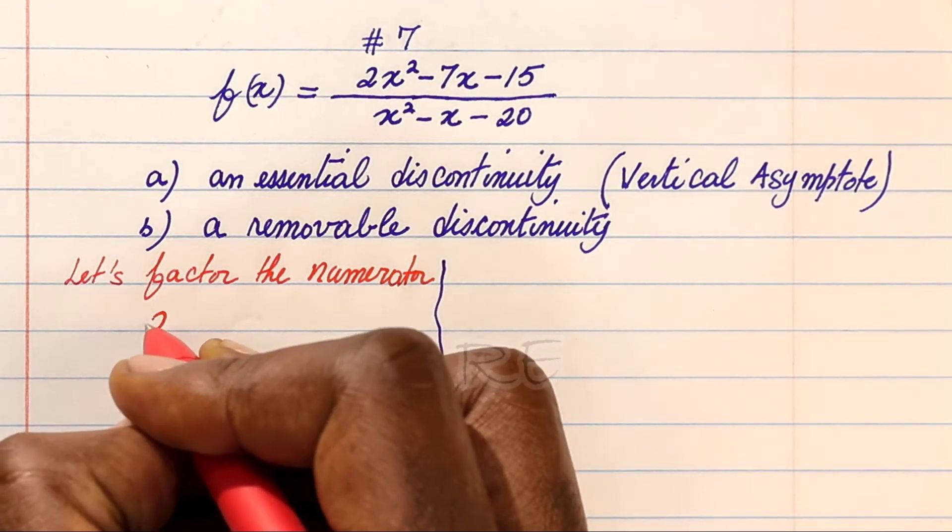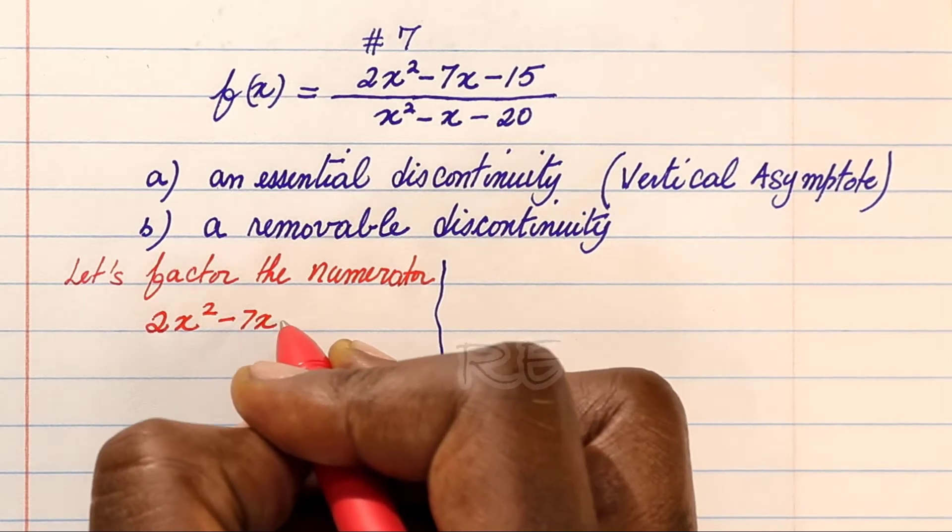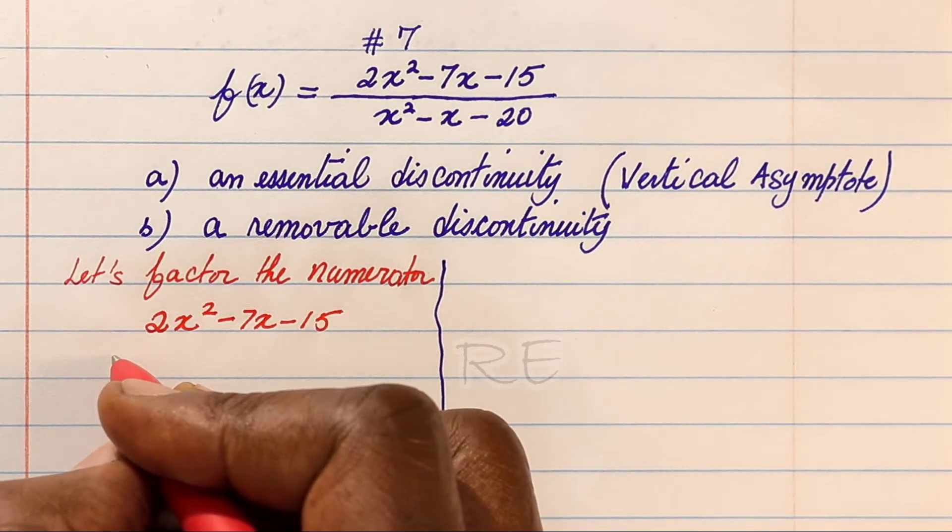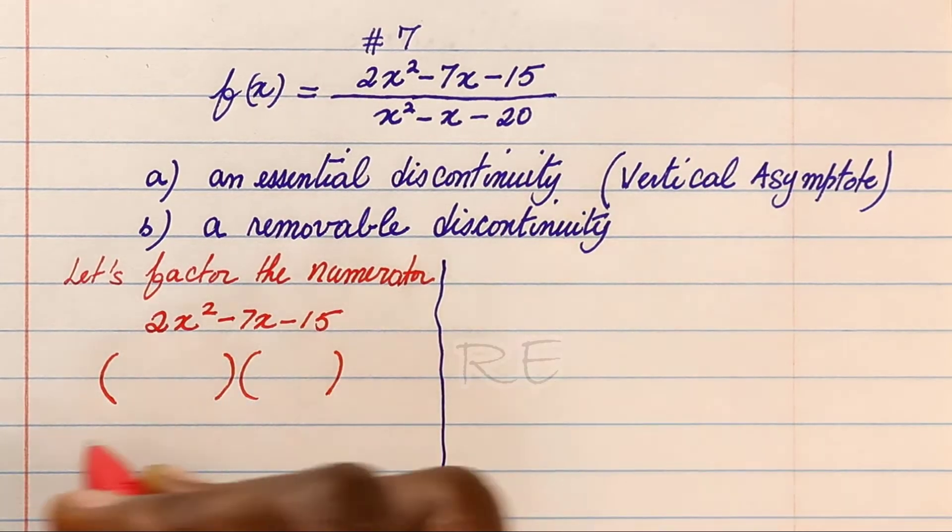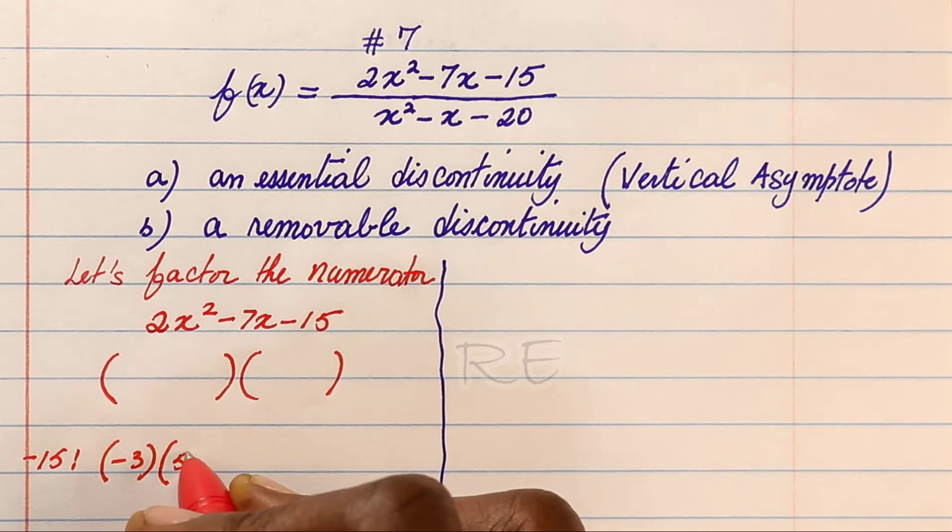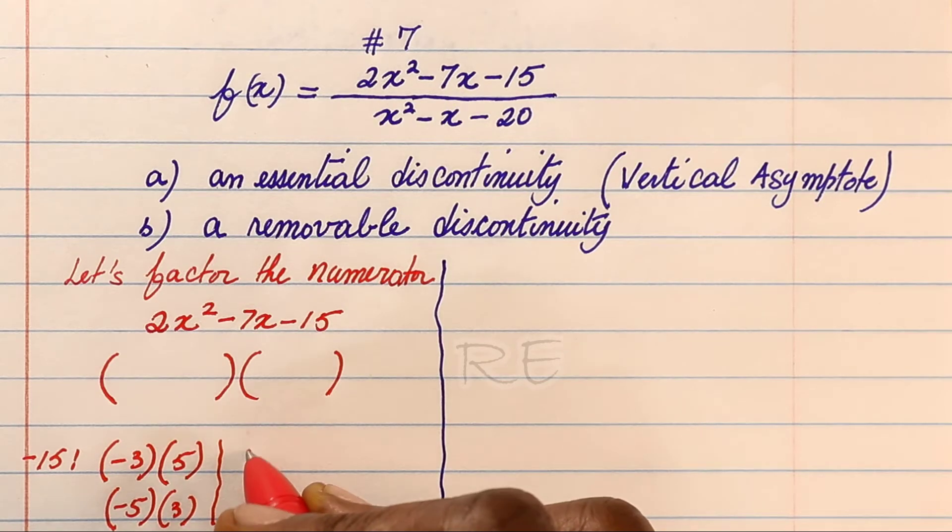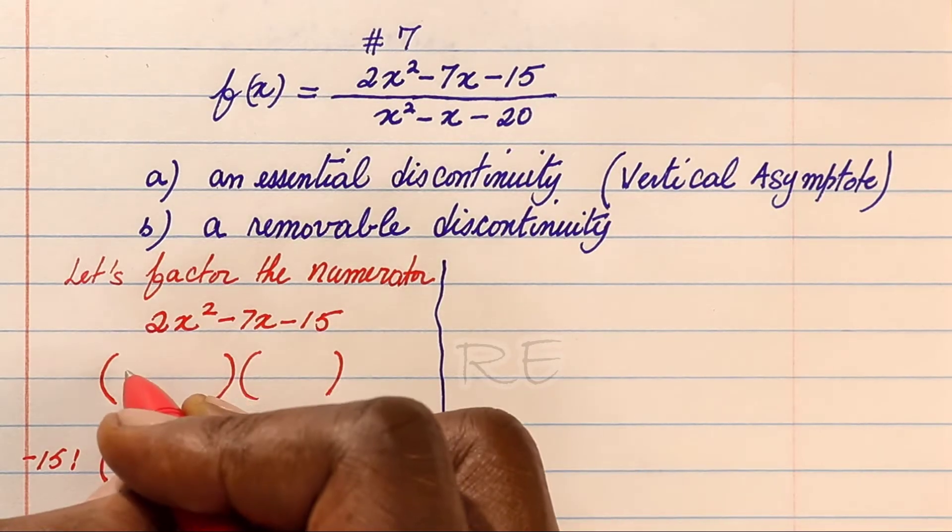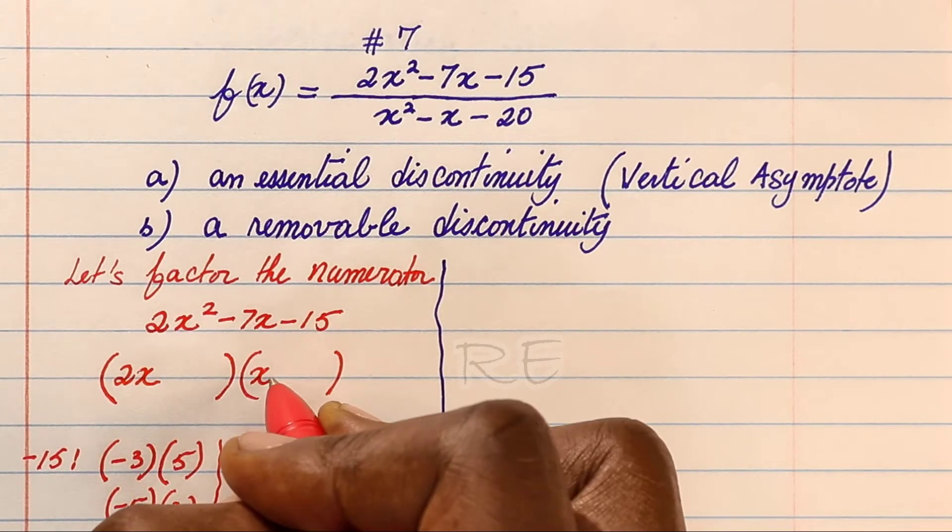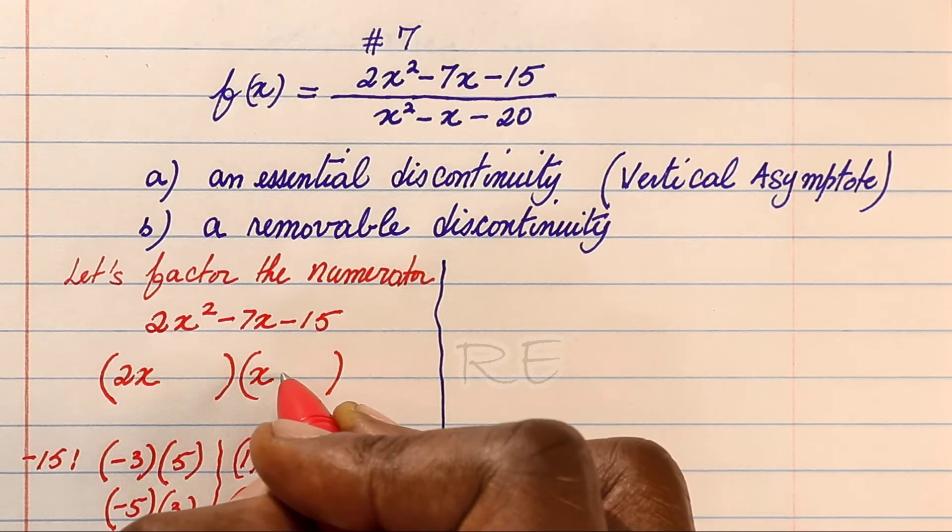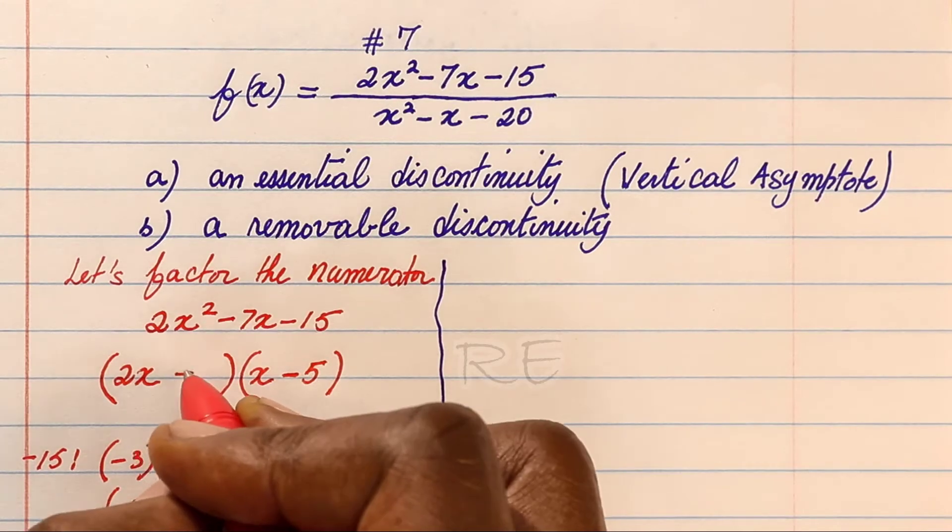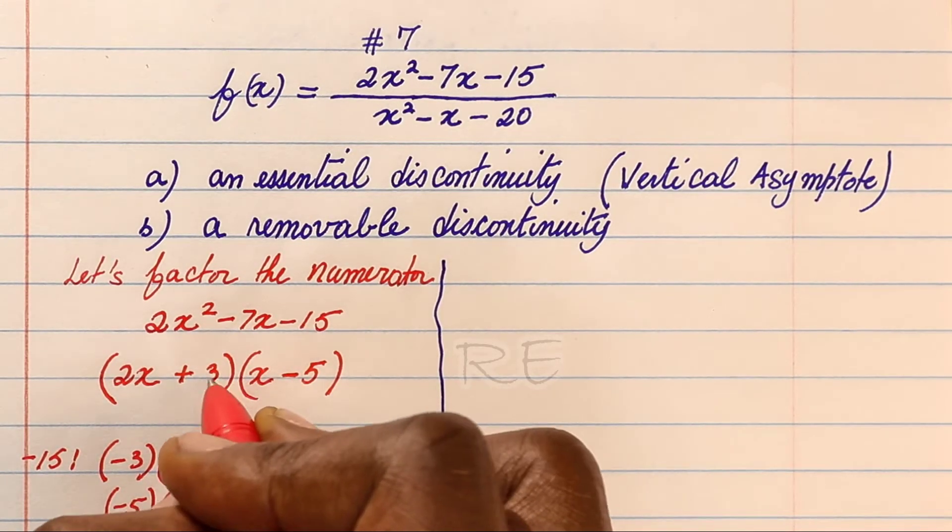So first let's factor the numerator: 2x squared minus 7x minus 15. We'll make our bubbles. Negative 15 can be negative 3 times 5 or negative 5 times 3. It can also be 1 times negative 15 and negative 1 times 15. We want a sum of negative 7. 2x squared is 2x times x. And since we want negative 7, we're going to place negative 5 over here and positive 3 here.